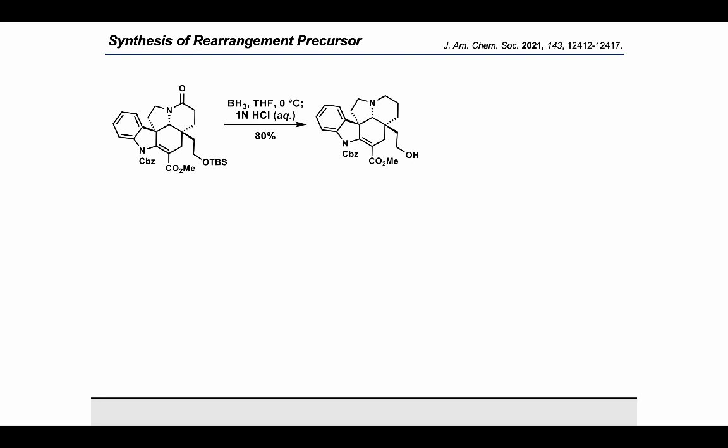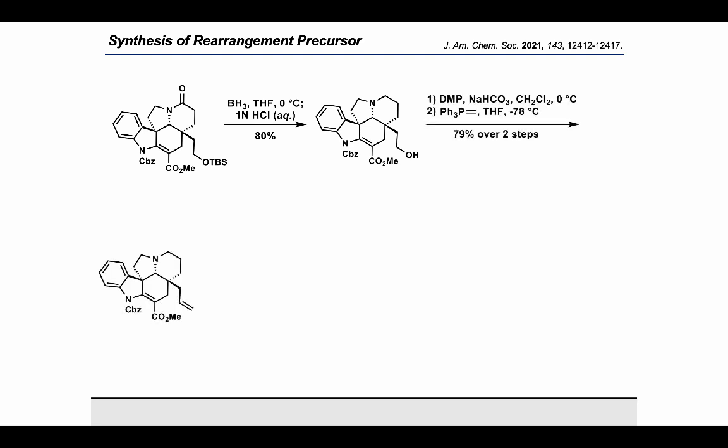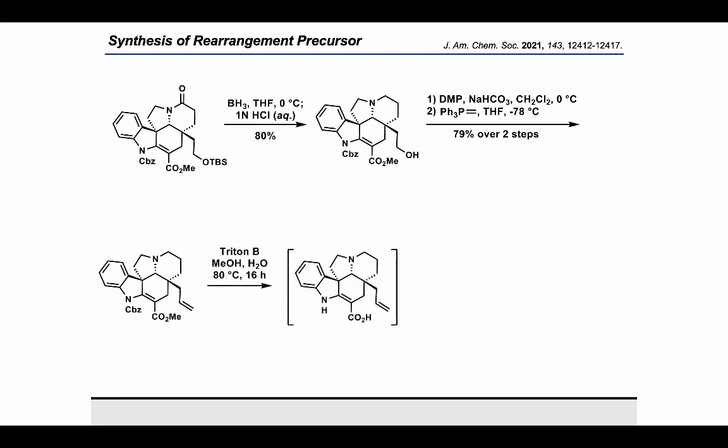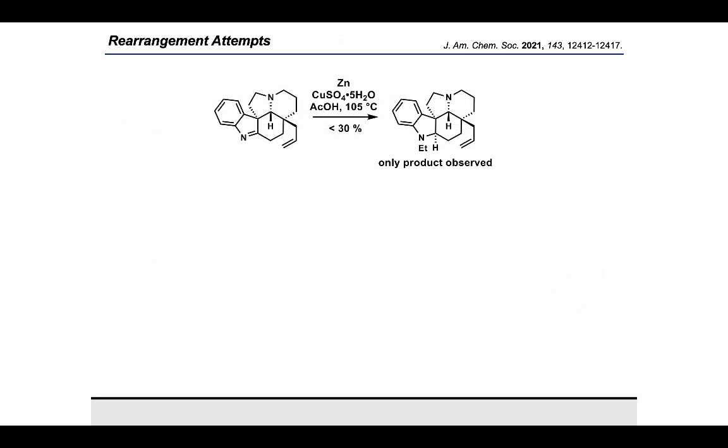Initial studies towards the rearrangement were done with racemic compounds. The amide was first reduced selectively with borane, followed by workup with 1N HCl to cleave the TBS ether, giving the primary alcohol in 80% yield. This was then oxidized to the aldehyde via Horner–Wadsworth–Emmons olefination to give the desired α,β-unsaturated ester product in 79% yield over two steps. The methyl ester was hydrolyzed with LiOH in methanol/water at 80°C for 16 hours, which both hydrolyzed the ester to the acid and cleaved the CBZ group.